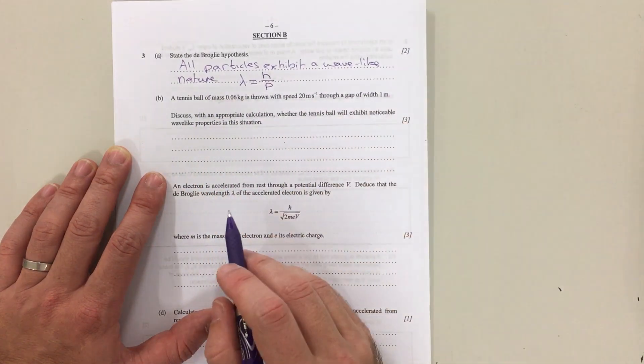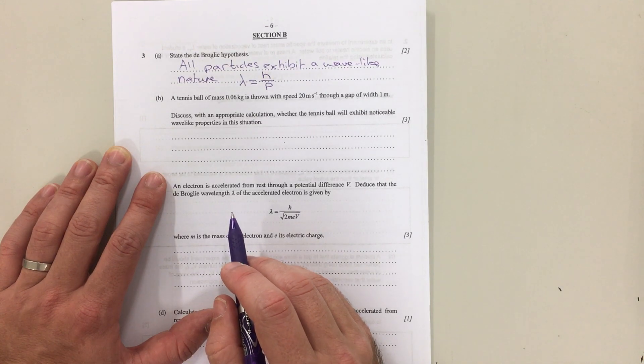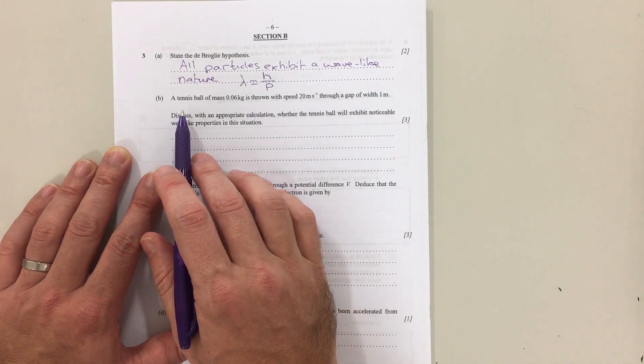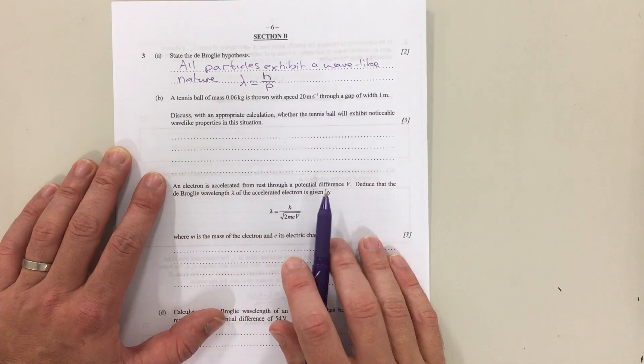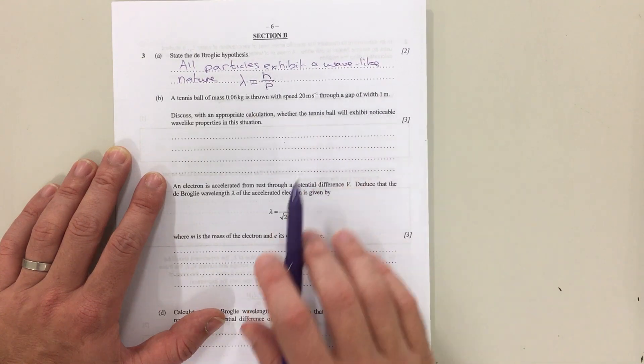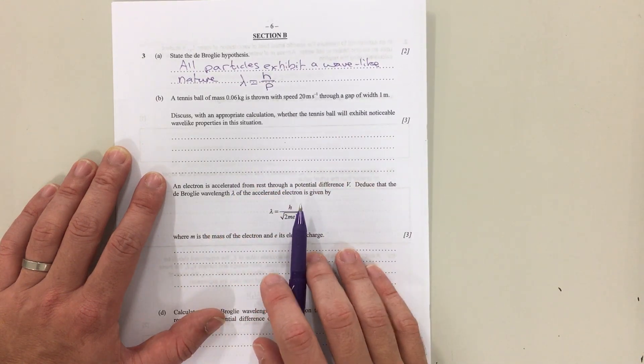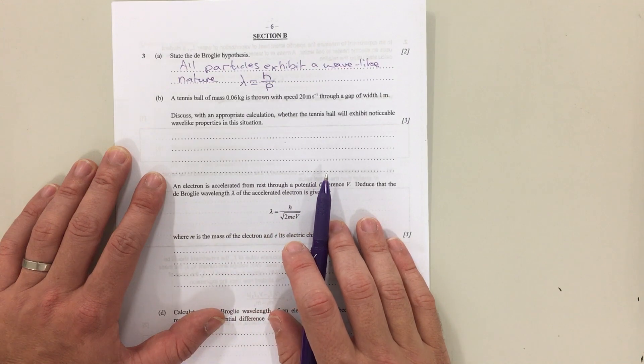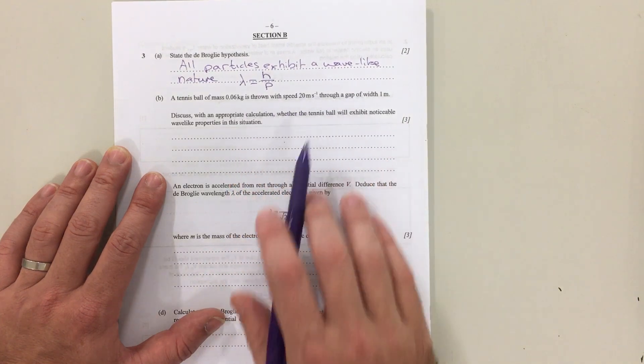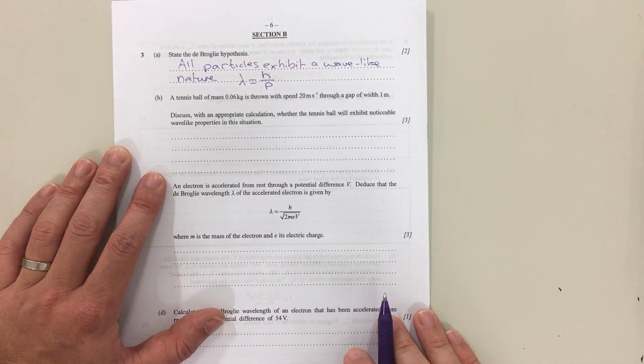The second question: a tennis ball of this mass is thrown with a speed of 20 meters per second through a gap width of 1 meter. Discuss whether the tennis ball will exhibit noticeable wave-like properties in this situation. Well, it's being thrown through a gap, so the wave-like property we're looking for is diffraction.